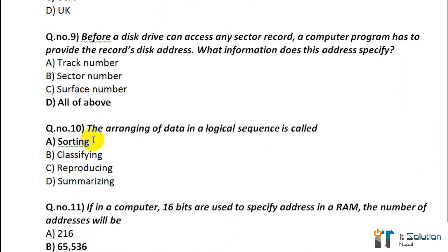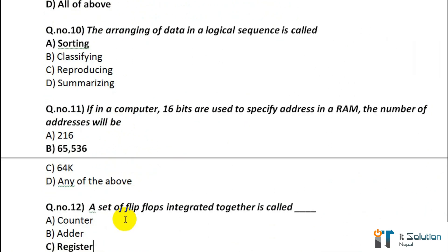Question number 10: The arranging of data in a logical sequence is called option A — sorting. Its correct answer is sorting. Question number 11: If in a computer 16 bits are used to specify an address in RAM, the number of addresses will be its correct answer is 65,536.